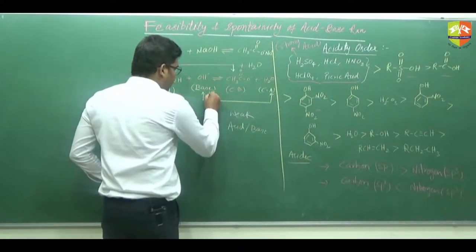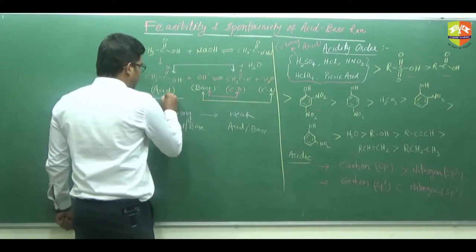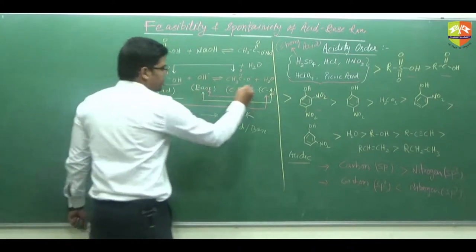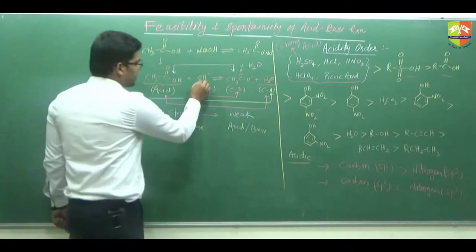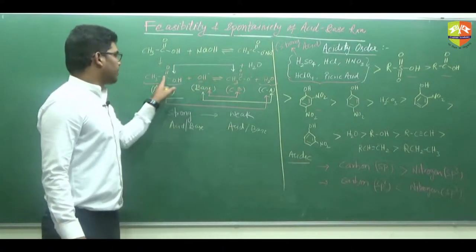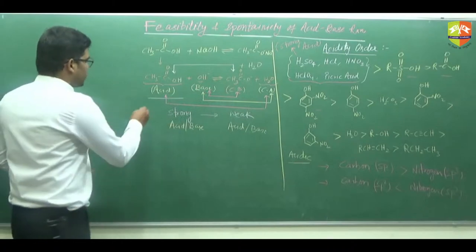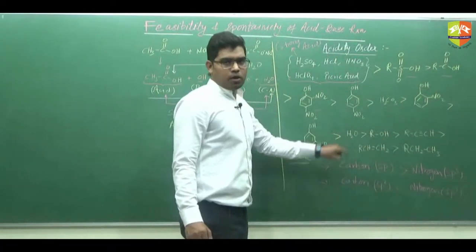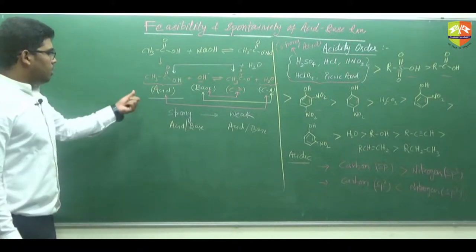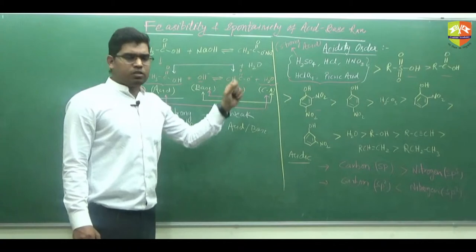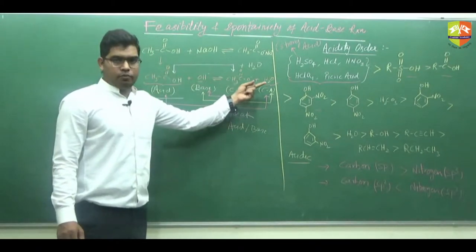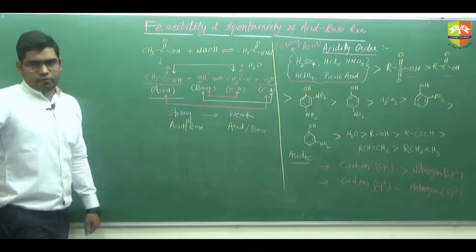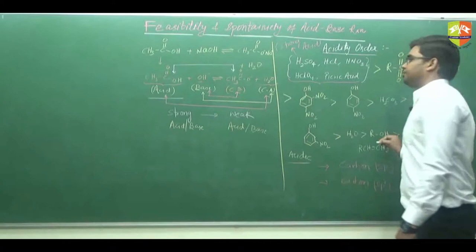Here you see, these two are bases and these two are acids if you compare — the red ones. This is acid and this is acid; these two are bases. So either we compare the two acids or we compare the two bases. CH3COOH is a stronger acid than H2O. Since the reaction is going towards the weak acid, the reaction is spontaneous and feasible. For this comparison, you should know this order — that is the first thing.